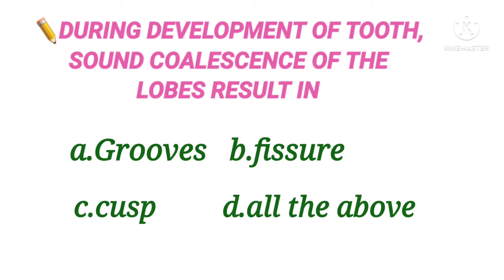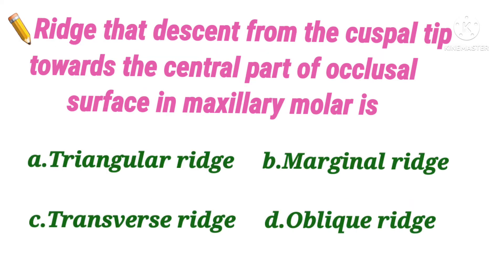The first question: during the development of tooth, coalescence of the lobes results in — option A grooves, B fissures, C cusps, D all of the above. The answer is option A, groove, because a developmental groove is a shallow groove or line between the primary parts of a crown or root or between the lobes. Fissures are deep pits and grooves on the surface of a tooth — if the fusion between the lobes is not proper, it results in fissures, which are more prone to caries.